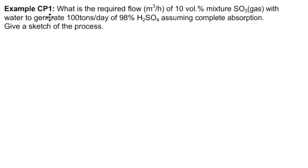Example from Chemical Processes 1. What is the required flow in meters cubed per hour of 10 volume percent mixture of SO3 gas with water to generate 100 tons per day of 98% H2SO4, assuming complete absorption of the SO3? Give a sketch of the process.